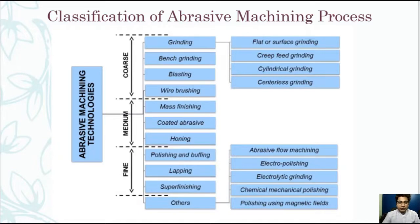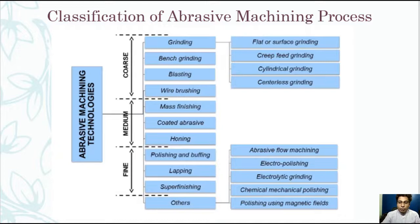Abrasive machining uses hard non-metallic particles to cut the workpiece. Unlike most other major machining operations, this group of processes can shape workpieces harder than 400 HV. Abrasive machining produces smooth surface finishes and enables close control over the amount of workpiece material removed. Consequently, it is mainly used for finishing operations.